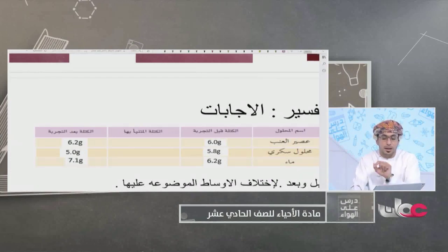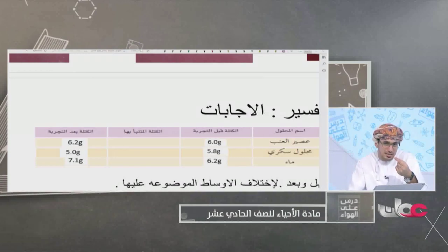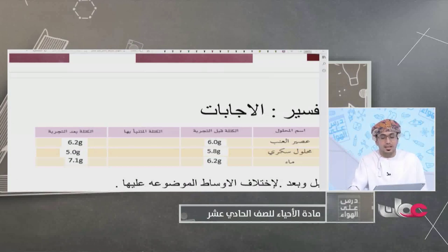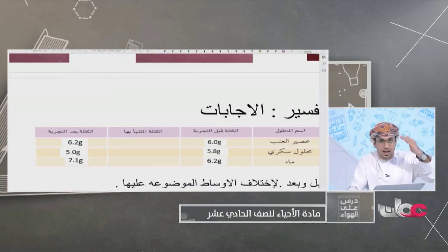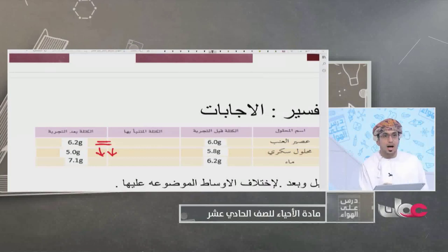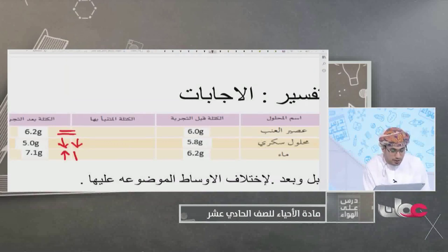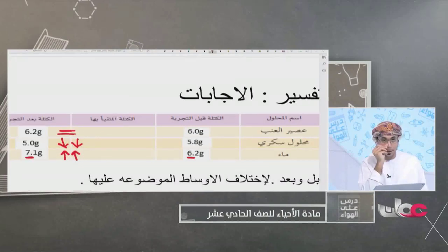النتائج: في عصير العنب كانت الكتلة 6 جرام وأصبحت بعد التجربة 6.2 جرام تقريباً، أي بقيت كما هي أو انتفخت قليلاً. في المحلول السكري كانت 5.8 وأصبحت 5 جرام فنقصت كتلتها. وأخيراً في الماء زادت الكتلة من 6.2 إلى 7.1 جرام.